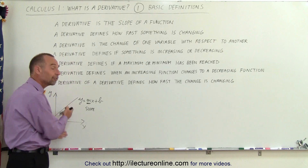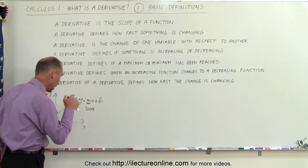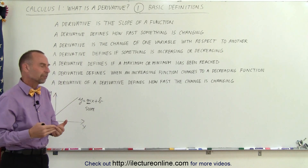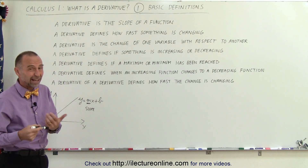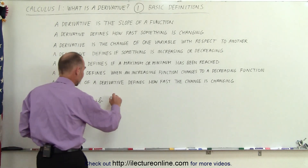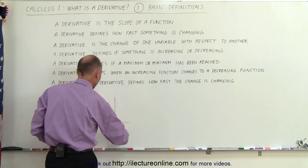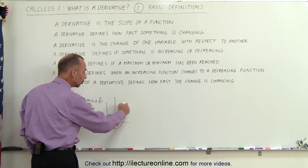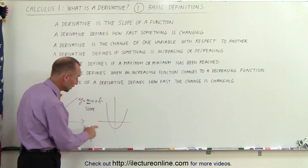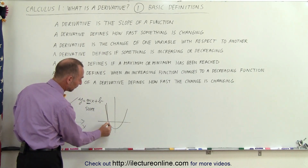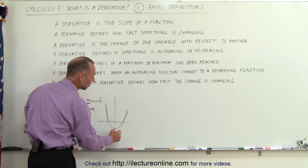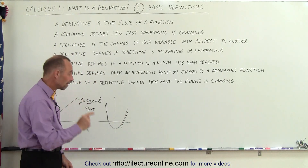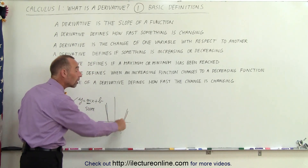Now, when we deal with a straight line function, that's very easy — we just simply say, there's the slope, therefore that's the derivative. But we can have functions that are not linear, like quadratic equations, and then you can see that the slope changes as we go to different parts of the function. Here you can see that the slope is negative; here you can see that the slope is positive. Therefore, we know that the derivative represents the slope anywhere along this function.